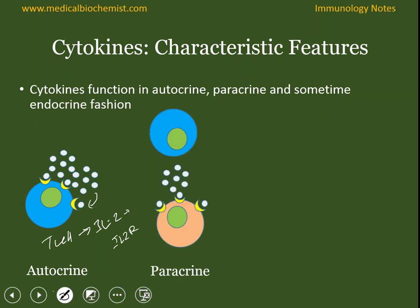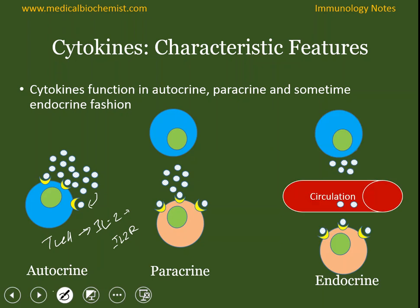Paracrine occurs when the cytokines secreted from the cytokine-secreting cells bind to a target cell that is nearby. And finally, endocrine: when the cytokines secreted by the secreting cells bind to distant cells, requiring the cytokines to be transported via circulation to reach the target cells.